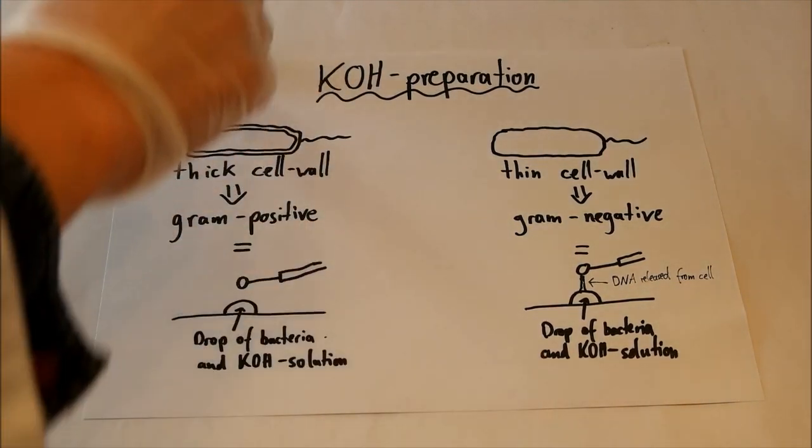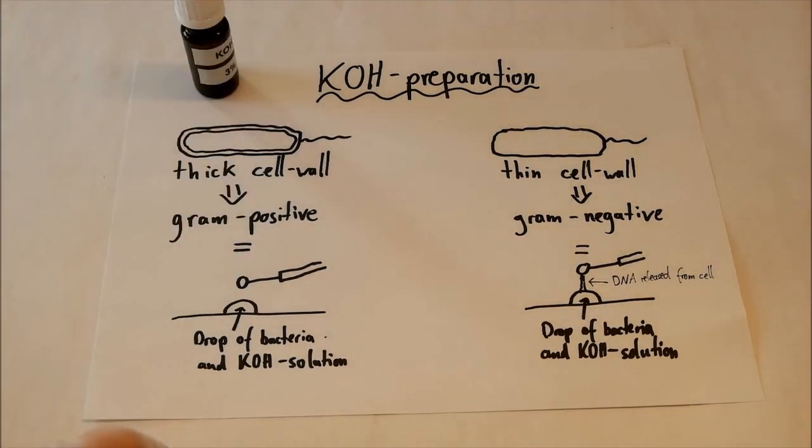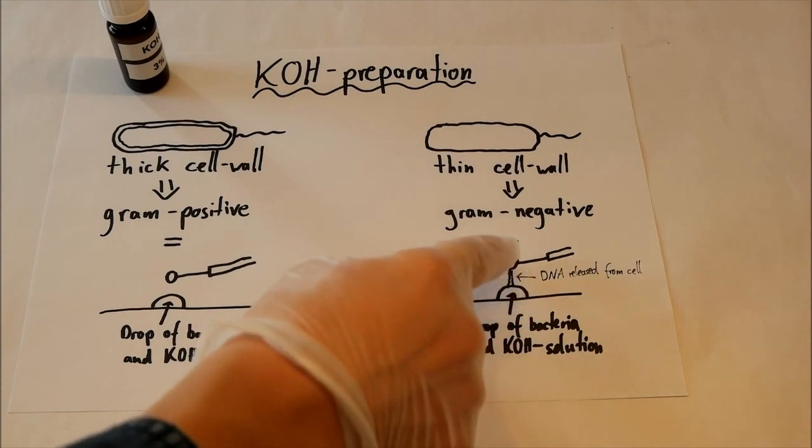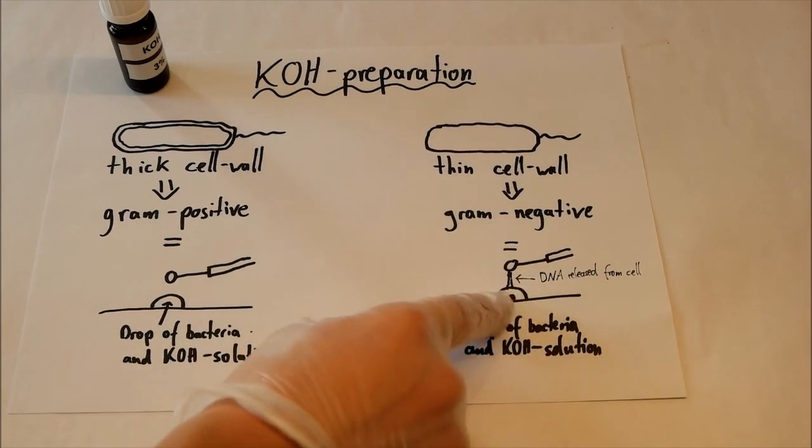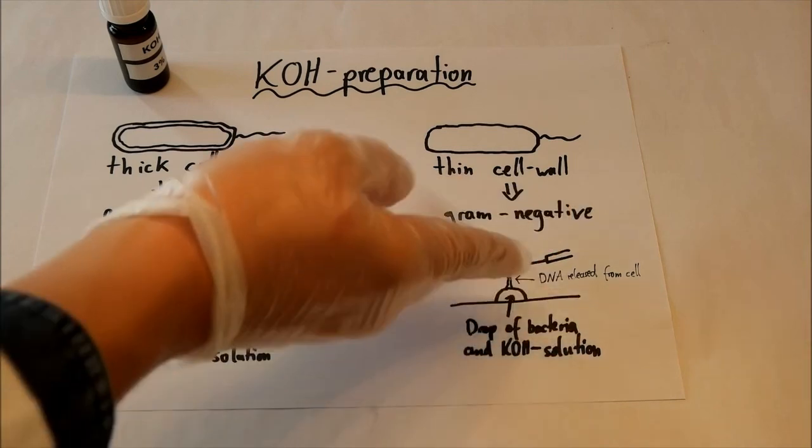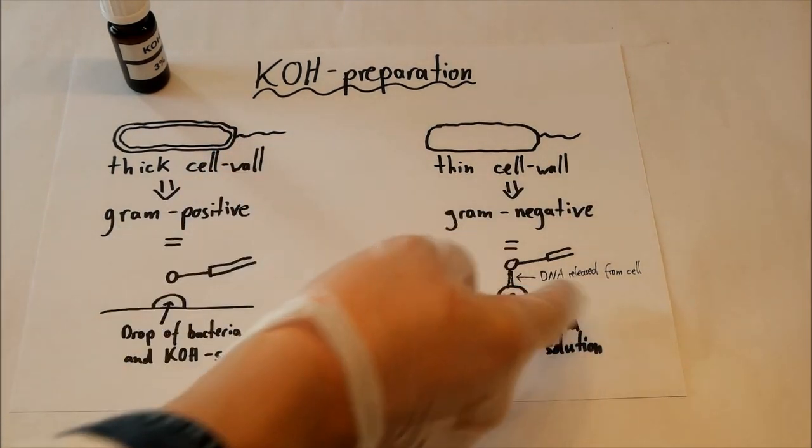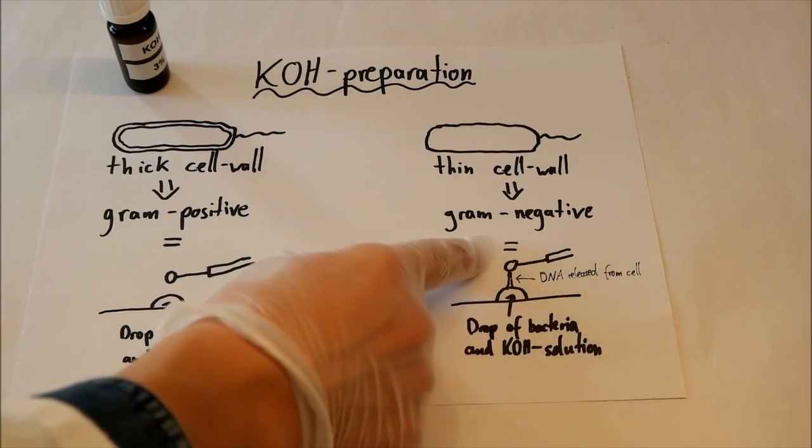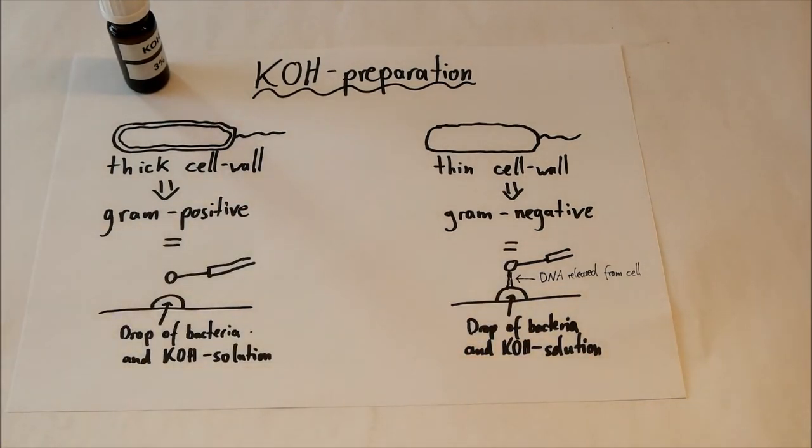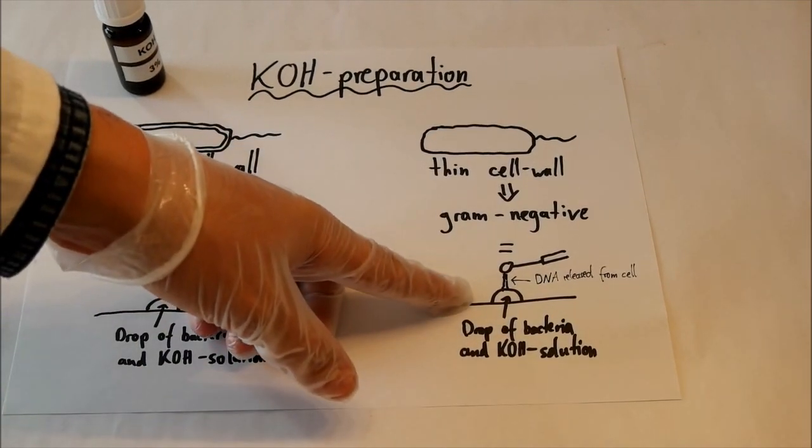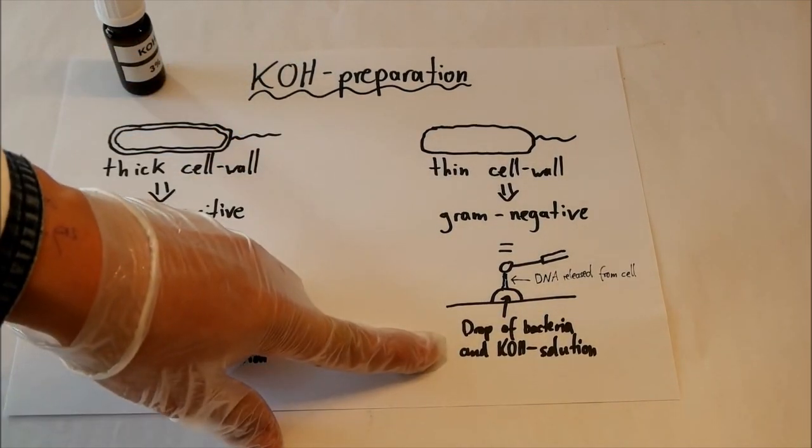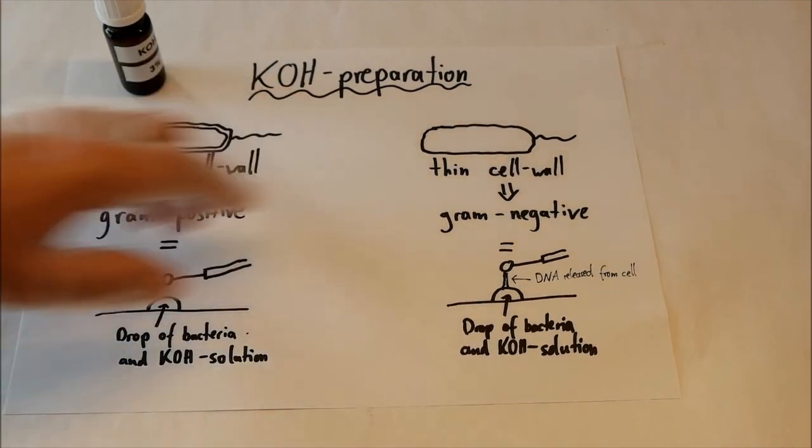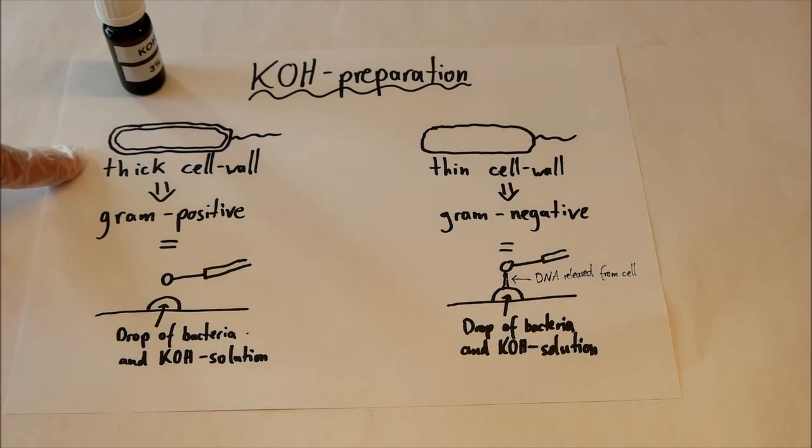So if you put a drop of the potassium hydroxide solution on your bacteria, and you stir it very well, and then you take your inoculation loop and take a piece of the drop up, there will be thin lines of DNA between the loop and the drop of bacteria and potassium hydroxide. This is because the potassium hydroxide can destroy this thin cell wall, but not the thick cell wall.